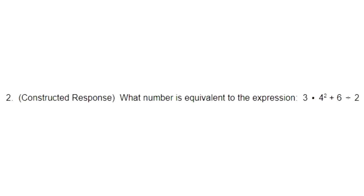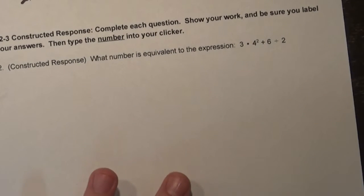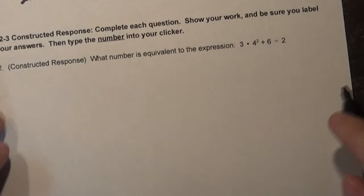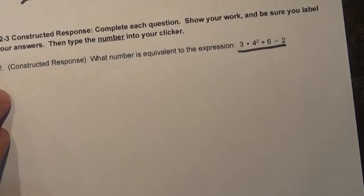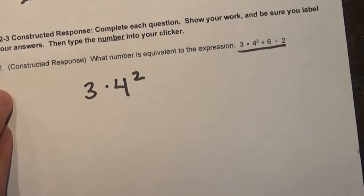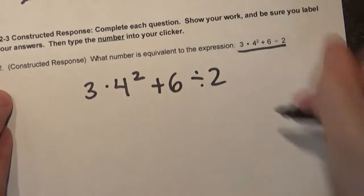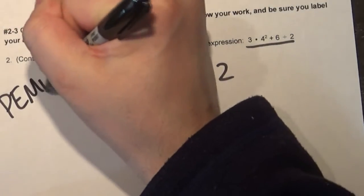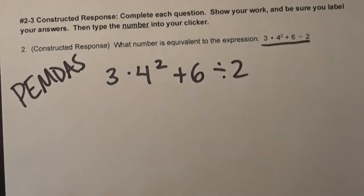Let's move on now to number two. Number two says what number is equivalent to the expression three times four squared plus six divided by two? Some of you might look at this and be a little thrown off just by the language — 'what number is equivalent?' In other words, they're saying what does this expression equal? So here's our expression; we basically just need to solve it. I'm going to rewrite that whole thing on my paper so I can use PEMDAS, because that's what we're going to be using here.